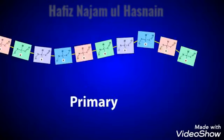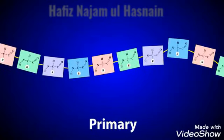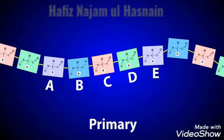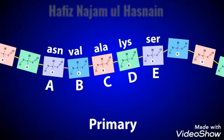The primary structure is the order of amino acids in the polypeptide chain. Amino acids can be likened to letters in the alphabet. Just as thousands of words can be constructed by varying the 26 letters in our alphabet, so too can different proteins be created by varying the number and sequence of just 20 amino acids.